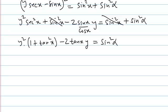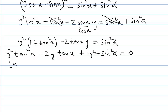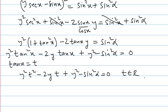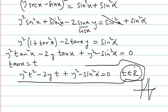And now you can see it is y square into tan square x minus 2 y into tan x plus y square minus sin square alpha equal to 0. Now we assume tan x equal to t to express this into quadratic form. So it is y square t square minus 2 y t plus y square minus sin square alpha equal to 0. And you can see t belongs to R. You know range of tan x. Tan x can take all possible values. So range of tan x is R. So we say t belongs to R.